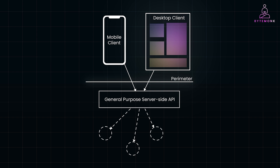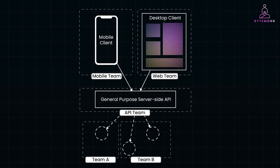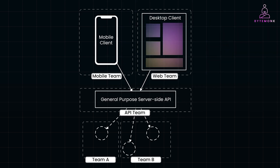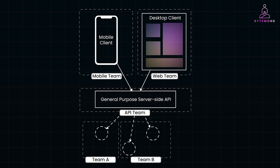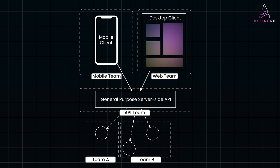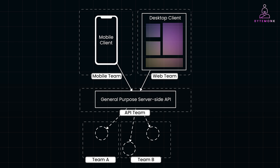Another issue with the general-purpose API is that it serves multiple user-facing applications, which can create a bottleneck when rolling out new features. This can lead to the creation of a dedicated team to manage the API, which complicates things further. Front-end teams now need to coordinate with this separate team, which balances multiple client priorities and works with various downstream teams. In essence, this turns the API into a complex piece of middleware, straying from the principles of service-oriented architecture.